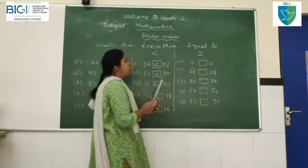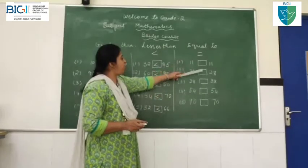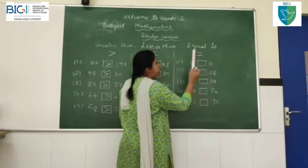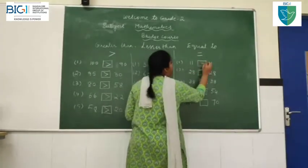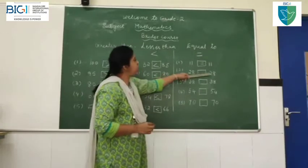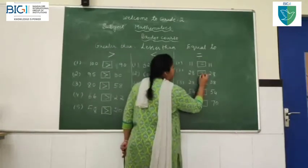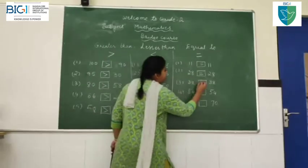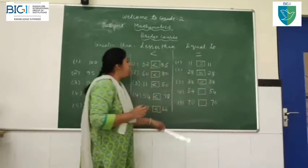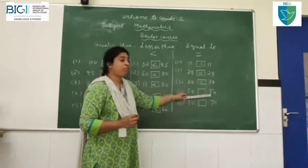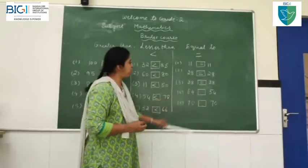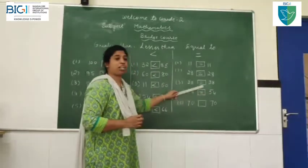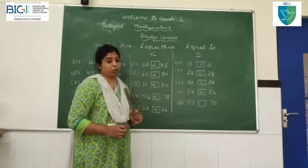Next, we will go to equal to. Children, it is very easy. When the two numbers are equal — left side number is equal to right side number — then we have to put the equals sign. 54 is equal to 54. Same number on both sides, so you have to put equal symbol. 70 is equal to 70.